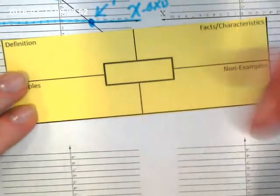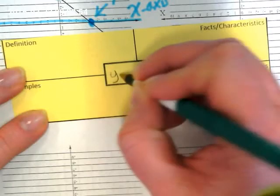Okay, so in our mini-Freyer model, we are doing this on the vocabulary term y-intercept.